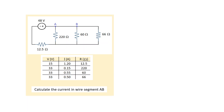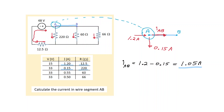The question is to calculate the current in wire segment AB. Before we do the Thevenin method, let's verify that from the solution table we can see that 1.2 amps passes through the 12.5 ohms, comes up and out of the positive of the 48 volt constant voltage source into junction A. The current in the 220 ohms — 0.15 amps — would go down out of junction A. So at junction A, the wire segment AB must have a current that is the difference of those values: 1.05 amps.